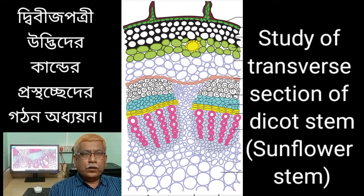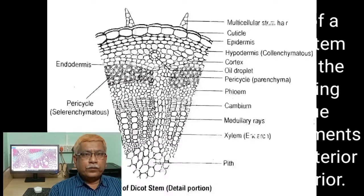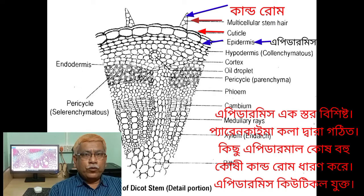Study of transverse section of dicot stem — sunflower stem. A transverse section shows the following tissue arrangement from exterior to interior. Epidermis: the outermost layer is called epidermis. It is made of a single layer of barrel-shaped parenchymatous cells. Some of the cells bear multicellular stem hairs.